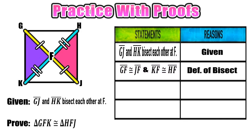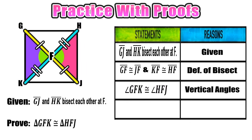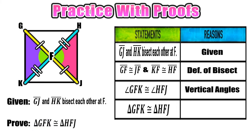Our reason for that is the definition of bisect. Next, we notice a pair of vertical angles — angle GFK and angle HFJ are congruent because vertical angles are always congruent. Now we have two congruent sides and one congruent angle in between them in each triangle, so we can use the Side-Angle-Side postulate to prove that triangle GFK is congruent to triangle HFJ. That proof is done.